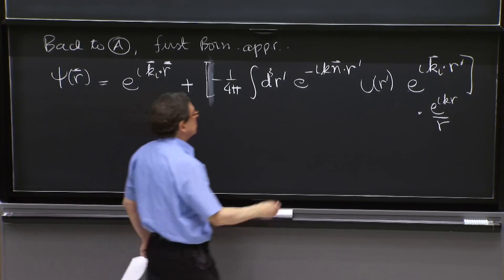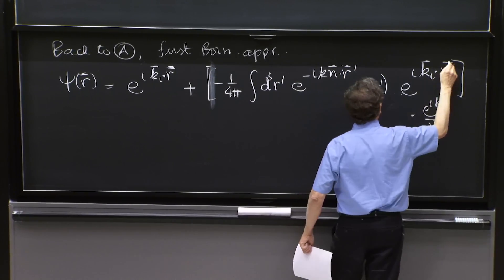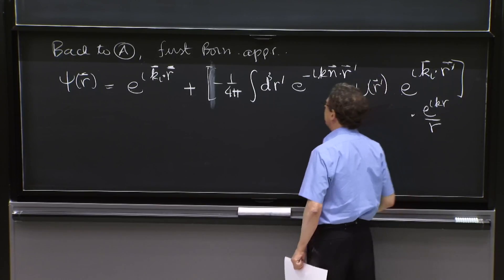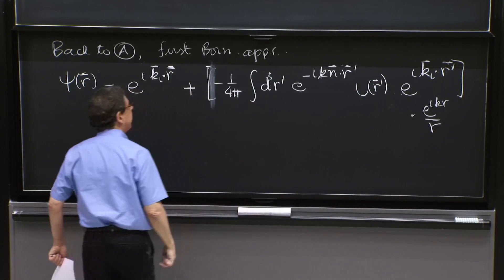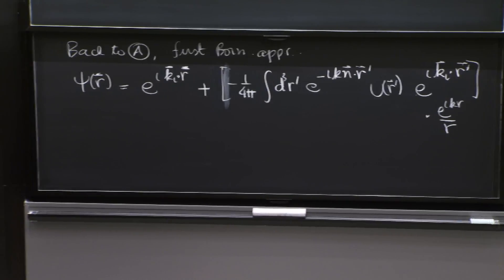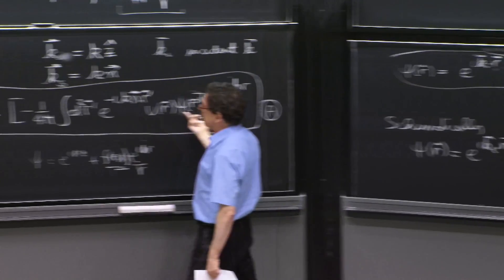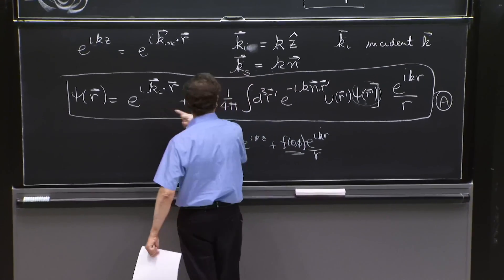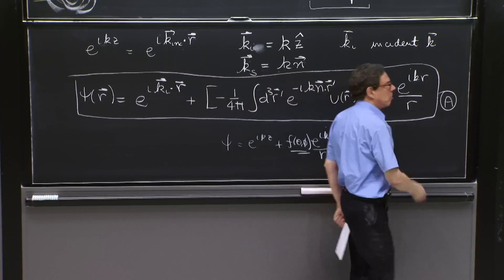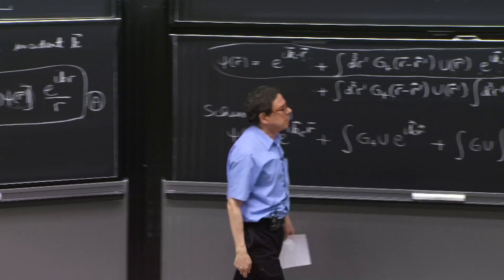All this multiplied by e to the ikr over r. So let's put a few vectors here. That's it. OK. So it's basically this same thing here, but now replacing the incident wave here. That's the so-called first born approximation.